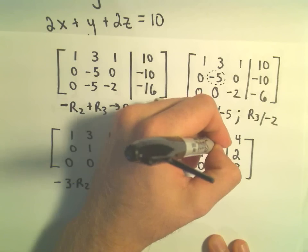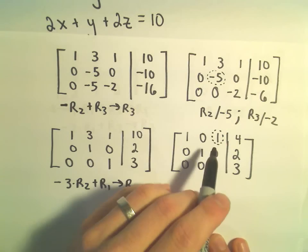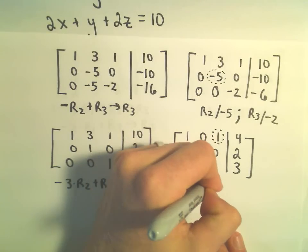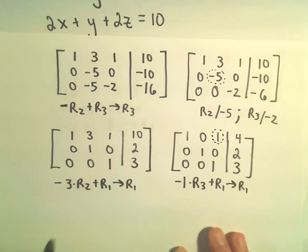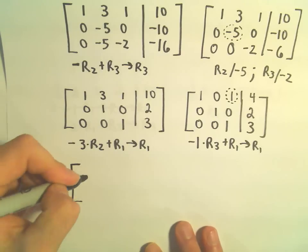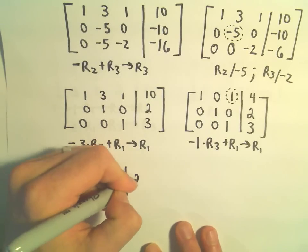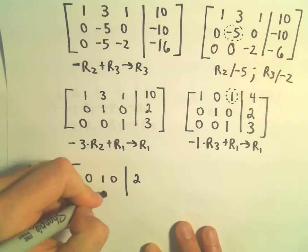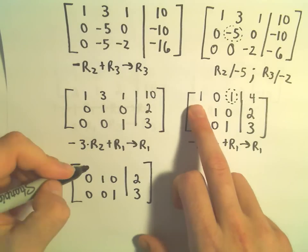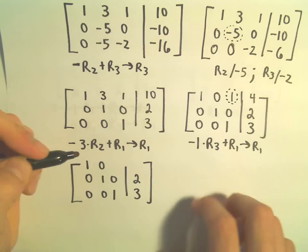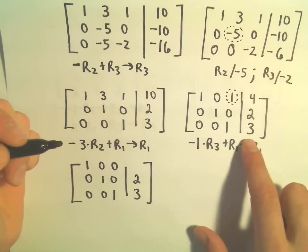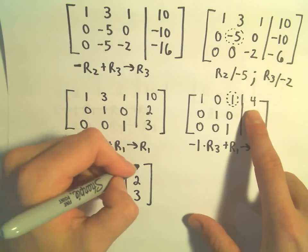One more step: I want to make a 0 in the remaining entry. I'll take negative 1 times row 3 and add that to row 1 to get my new row 1. Row 2 (0, 1, 0, 2) and row 3 (0, 0, 1, 3) stay the same. Negative 1 times 0 plus 1 gives 1; we get 0; negative 1 times 0 gives 0; negative 1 times 1 plus 1 gives 0; negative 1 times 3 plus 4 gives positive 1.